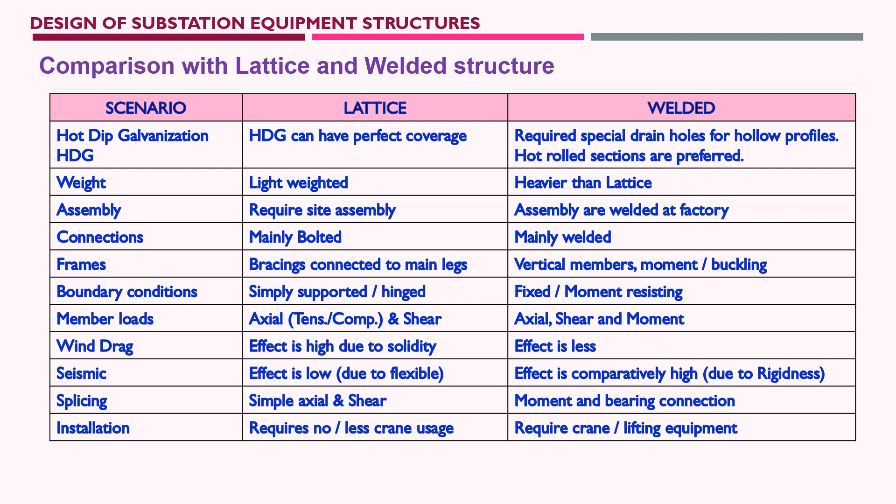For hot-rolled sections like H-sections, UPN, I-beam, or angle sections used in welded structures, hot-dip galvanization is not a problem. Regarding weight, lattice structures are generally lighter than welded assemblies. Site assembly is required for lattice structures, though some projects prefer factory assembly. For welded structures, assembly must be completed at the factory before hot-dip galvanization, so fully assembled welded structures are sent to site after galvanization.